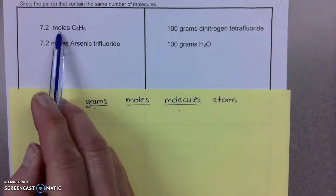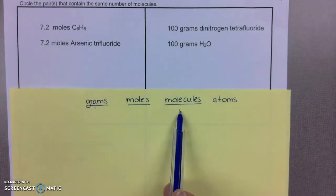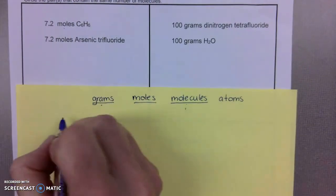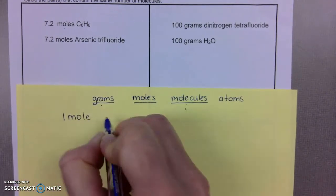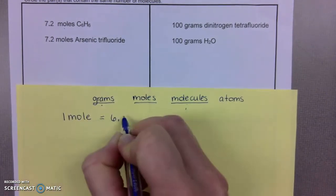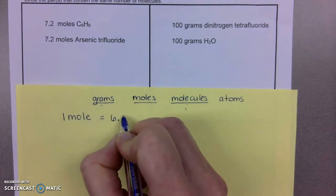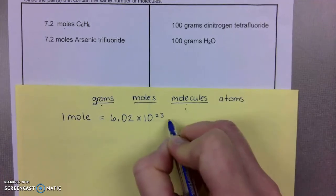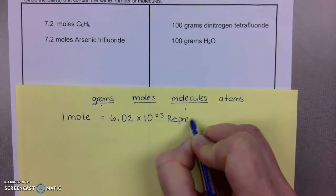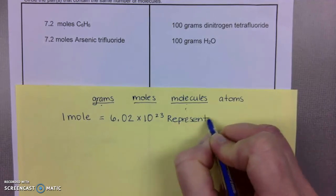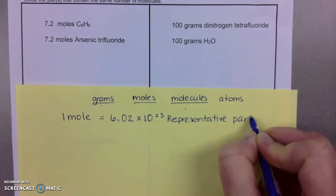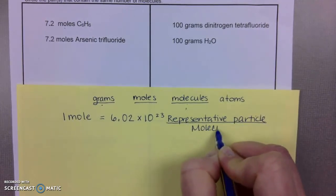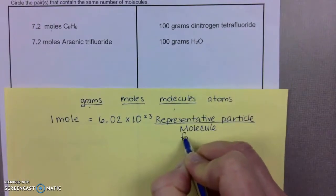We're starting with moles and converting into molecules. What we need to know from this is what one mole is equal to. One mole is equal to a value called Avogadro's number, which is 6.02 times 10 to the 23rd, and it's generically called representative particle.